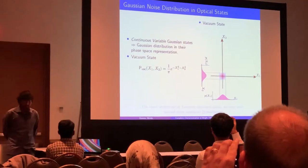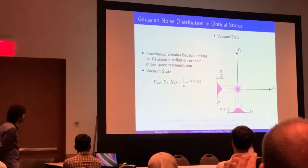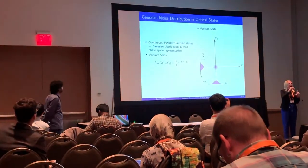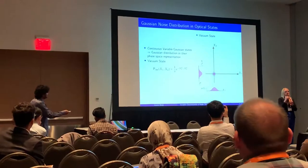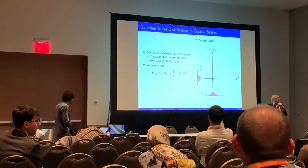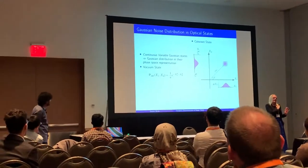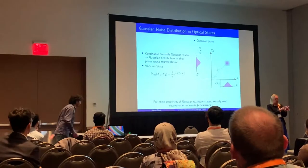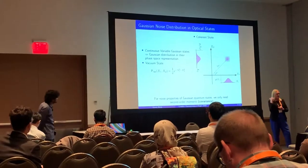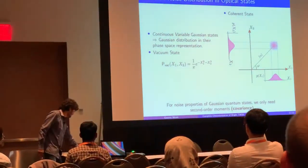The class of states we are interested in are Gaussian states, which are continuous variable states. They are called Gaussian states because if you look at their phase-space representation — looking at the in-phase and out-of-phase components for the light field — the distribution is Gaussian in both. For example, in the case of vacuum, the mean values are zero and the distribution is Gaussian. Similarly, for the coherent state, which is just a displaced vacuum state, you have a Gaussian distribution with non-zero mean values. If you are only interested in the quantum noise properties of these states, all you need is the second-order moments, effectively captured by the covariance matrix.